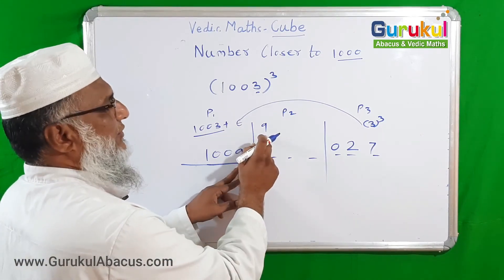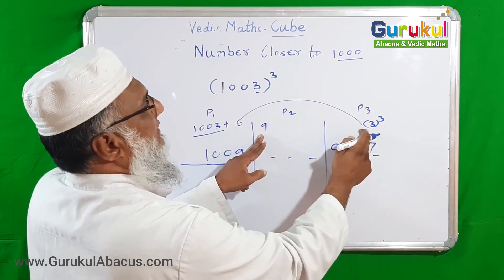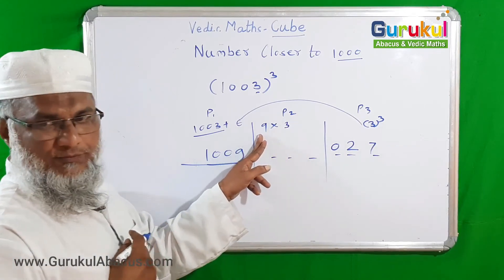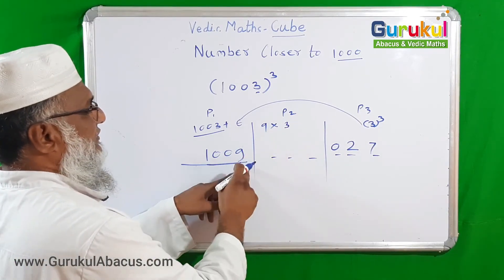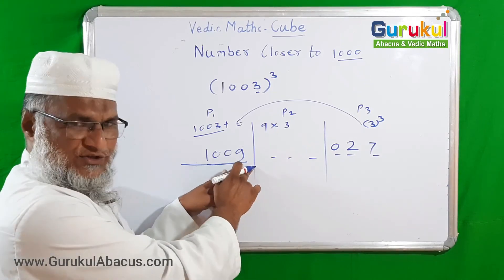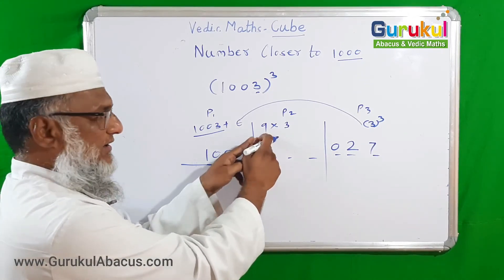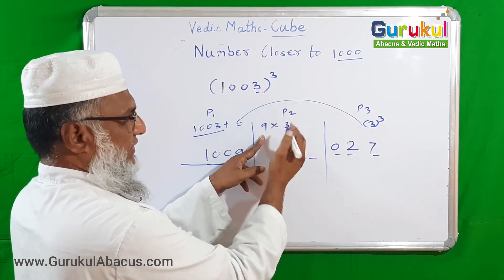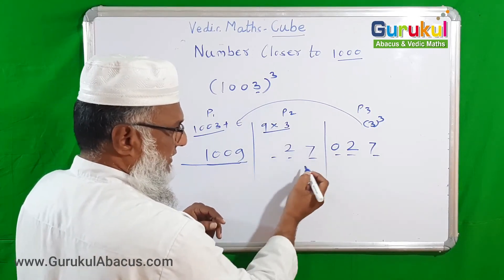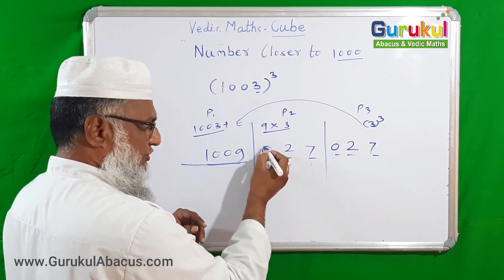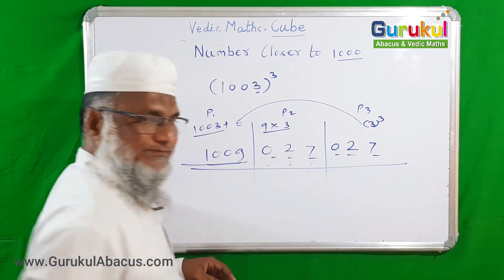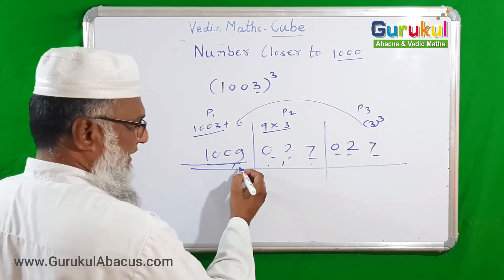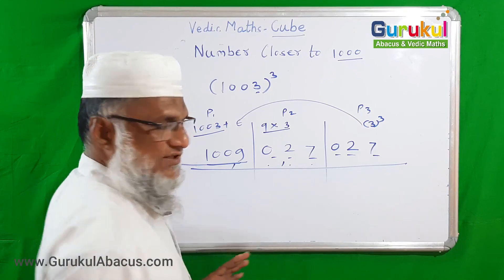P1 exceeds 1000 by 9, since P1 is 1009. The excess is 9. We take the excess from 1000, which is 3, and multiply: difference is 9 and the excess number is 3, so 9 times 3 is 27. But again I want a three-digit answer so I put a zero to get 027. So the final answer is 1009 | 027 | 027.